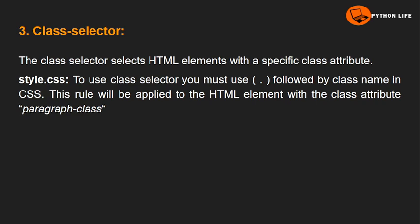The next one is the class selector. The class selector selects HTML elements with a specific class attribute. Similar to how an ID has id equal to some name, for class we write class equal to some name, like 'head' or 'demo'. With the help of the class name, we add a CSS style to the tagged element.